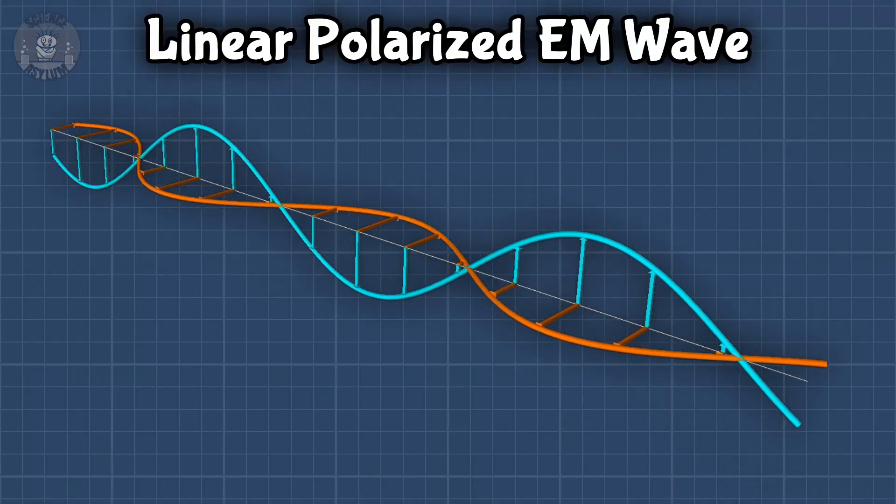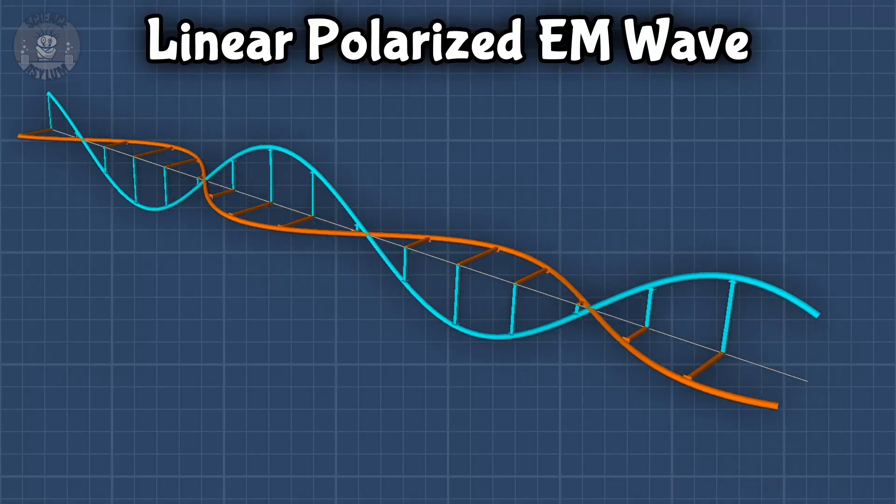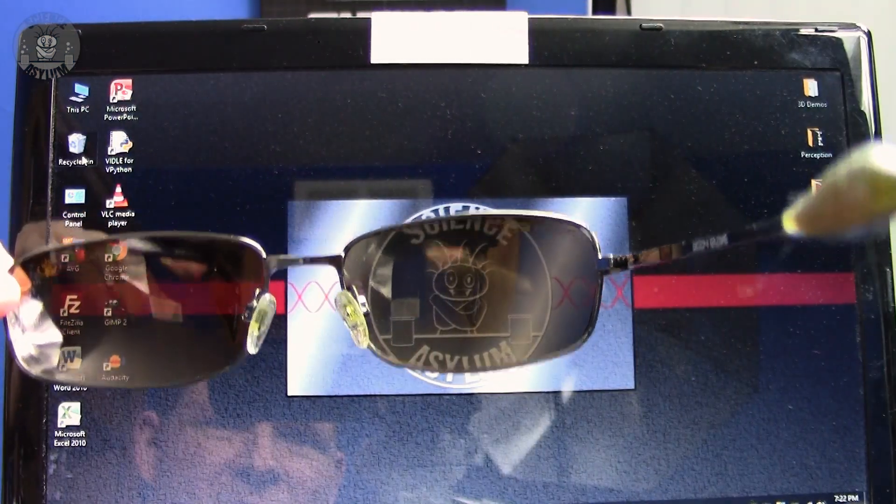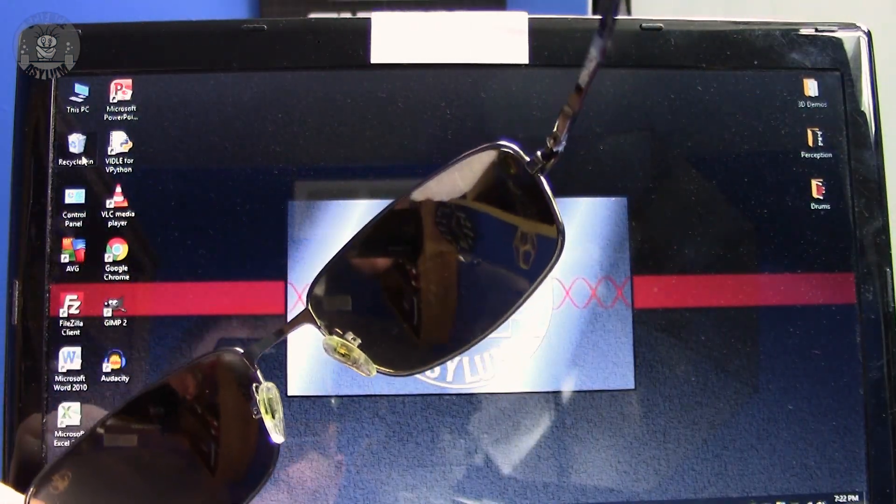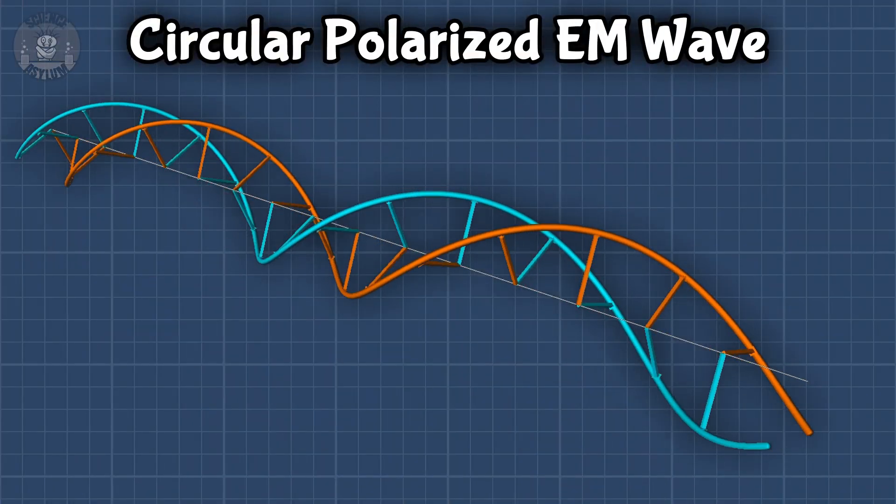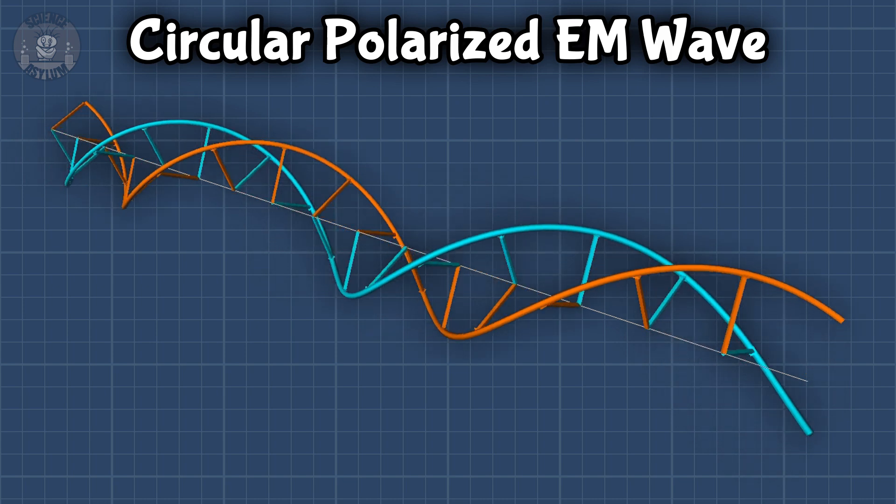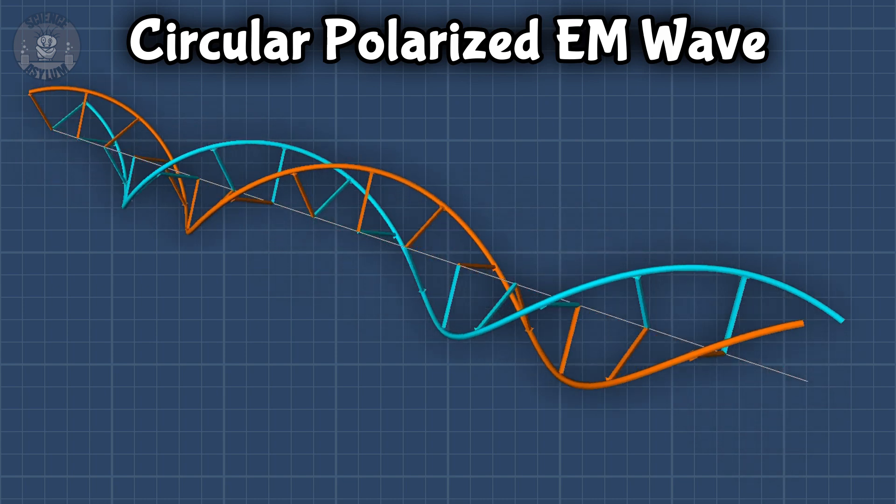This is a linear polarized EM wave. It's nice and simple, but not so useful for movie theaters because the light would dim if you tipped your head. What we need is a wave that moves like this, a circular polarized EM wave.